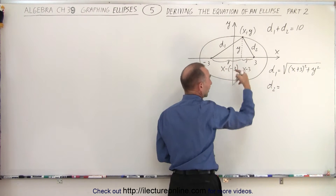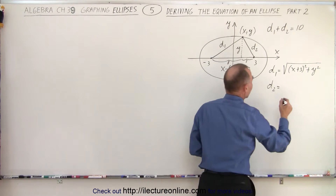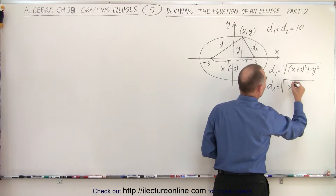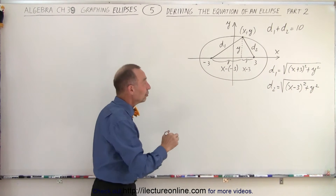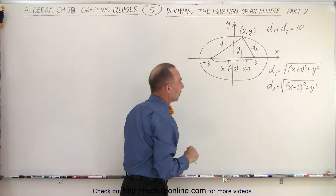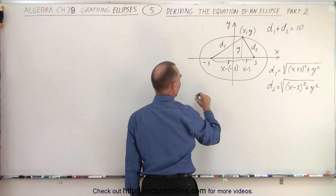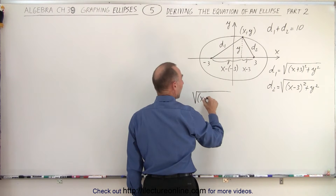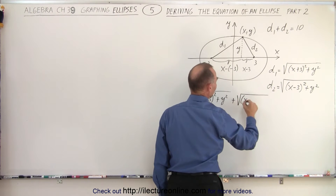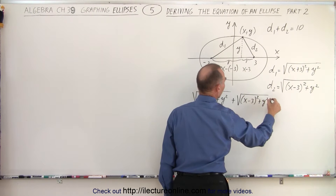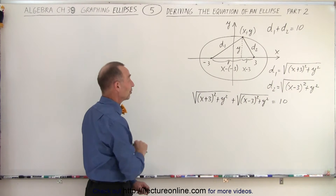And we can do the same for d2. d2 will be equal to — the height here is y, and this distance can be written as x minus 3. Since 3 is bigger than x in this picture that would be a negative number, but we don't care because when we square it we get the correct value anyway. So this would be the square root of x minus 3 quantity squared plus y squared. So now we've established d1 and d2 for any point along that ellipse. We know that the sum of those two equals 10, so d1 plus d2 equals 10.